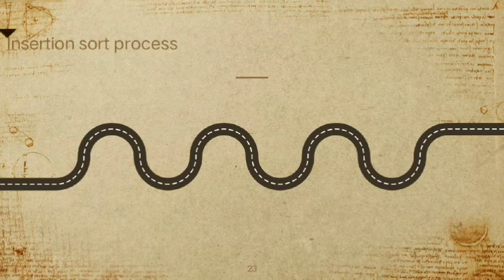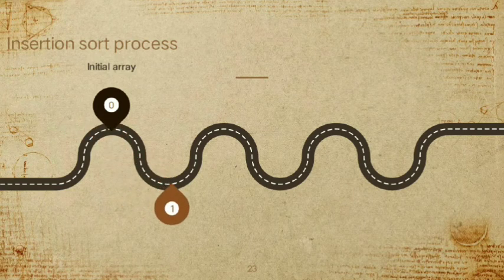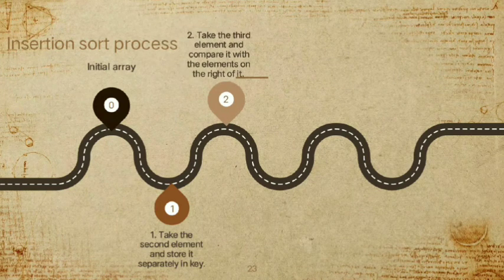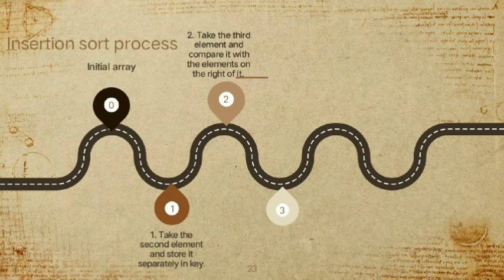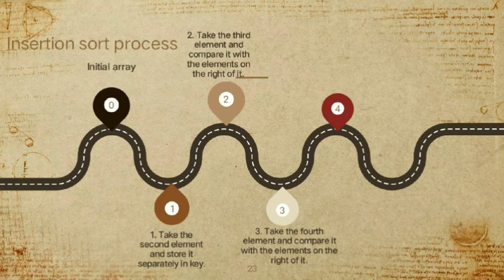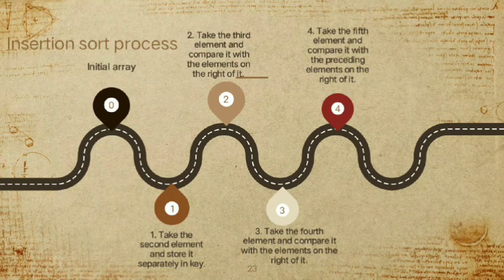That is the whole working of insertion sort. In summary: we display the initial unsorted array values; step 1 takes the second element and stores it in key; step 2 takes the third element and compares it to elements on the right; step 3 takes the fourth element; and step 4 takes the fifth element and compares it with preceding elements. That is the whole process of insertion sort.